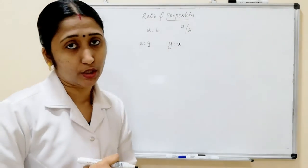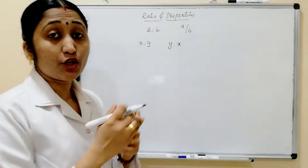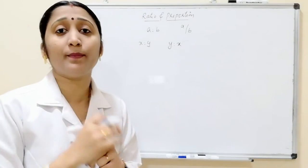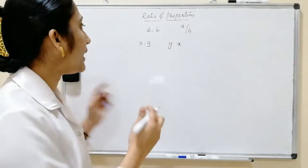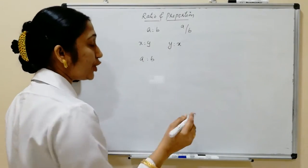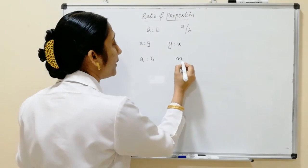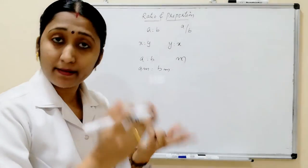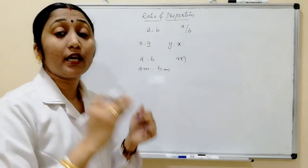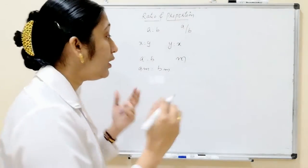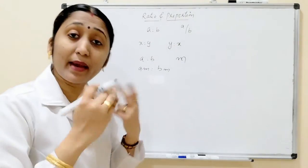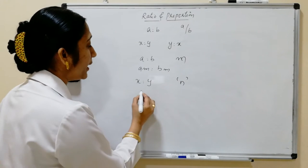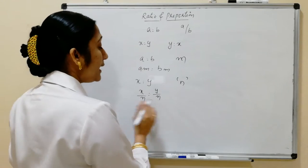If any ratio is multiplied or divided by non-zero numbers, there is no change in that ratio. For example, if A is to B, you multiply a non-zero number M, the ratio becomes AM is to BM — but there is no change. Similarly, if X is to Y is divided by a non-zero number N, it becomes X/N is to Y/N — it remains the same.